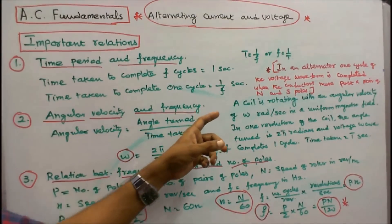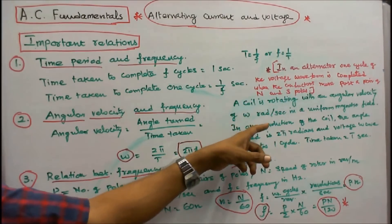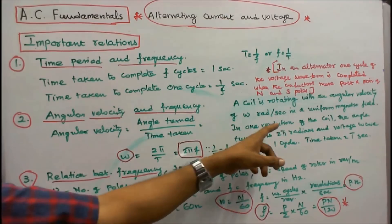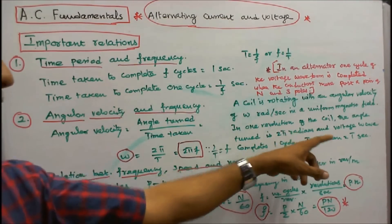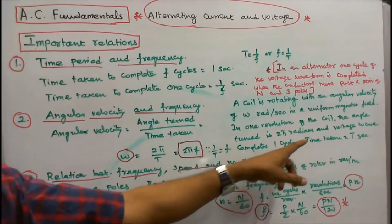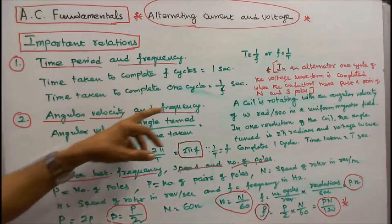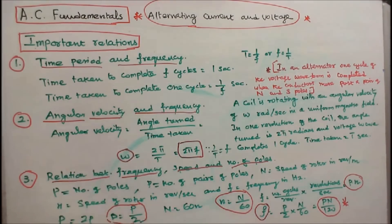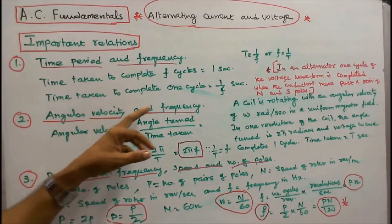Consider a coil rotating with an angular velocity of omega radians per second in a uniform magnetic field. In one revolution of the coil, the angle turned is 2π radians and the voltage wave completes one cycle in time T seconds. Since angular velocity equals angle turned divided by time taken, omega equals 2π over T. Since 1 over T equals f, we can write omega equals 2πf. That is the relation between angular velocity and frequency.